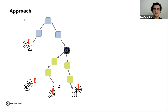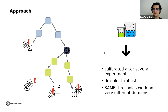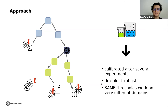At the end of our approach, we will have a graph where we have resources that belong to the domain, some resources connected to the main domain from related domains, and we can also identify the irrelevant resources. These thresholds measure this area of influence of the target domain. They were calibrated after several experiments, but they are flexible and robust at the same time — the same thresholds work well on very different domains, so they are not specific to a concrete domain.